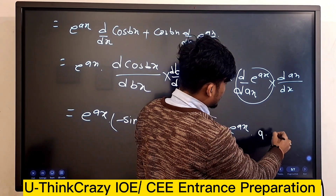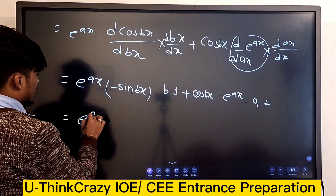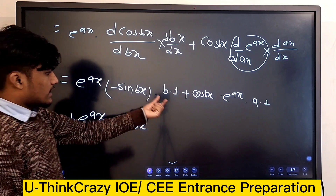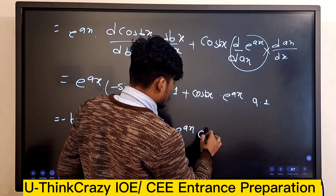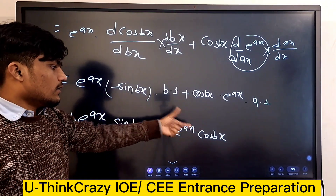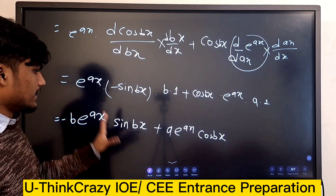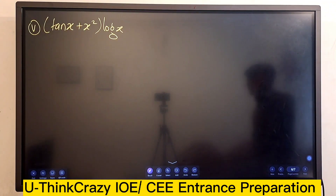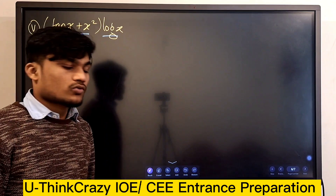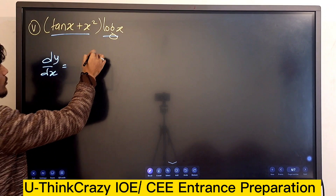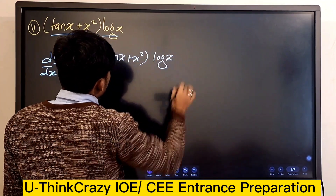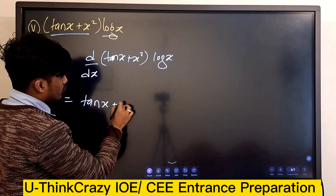Okay, one more — I hope you guys can answer this. Next question — same type, same-to-same. You can see that — using the product rule. The product rule will give you a lot of things here.